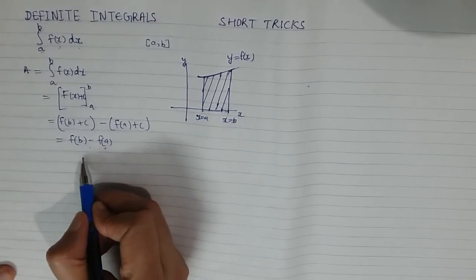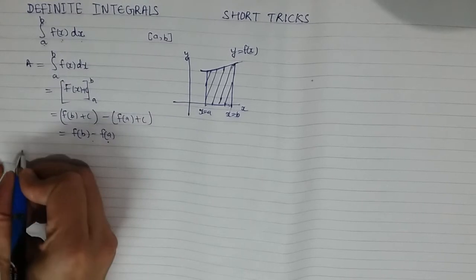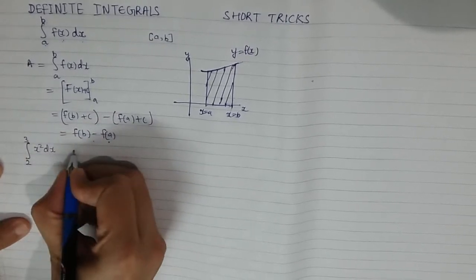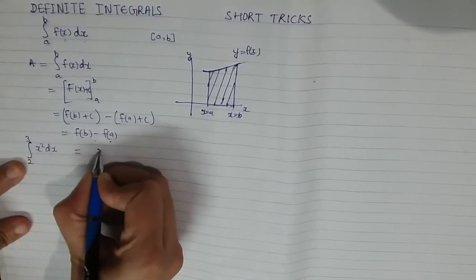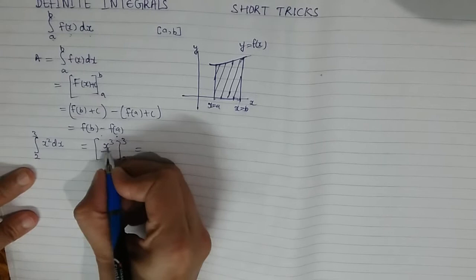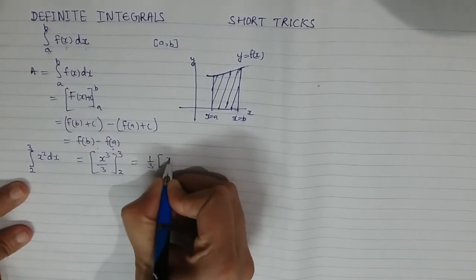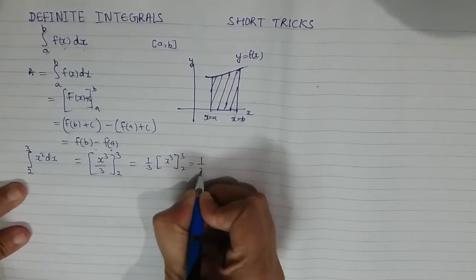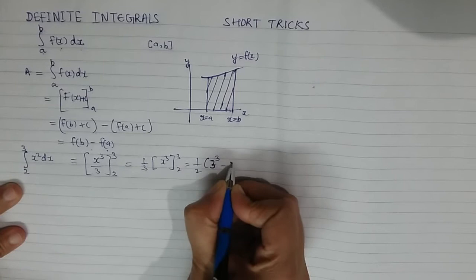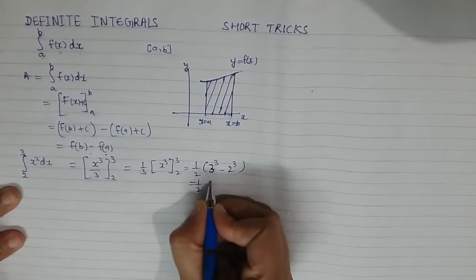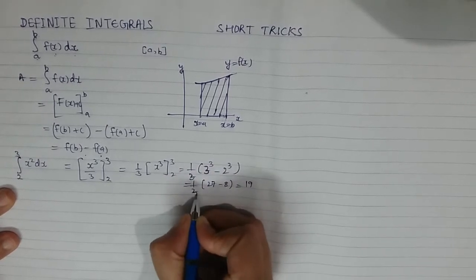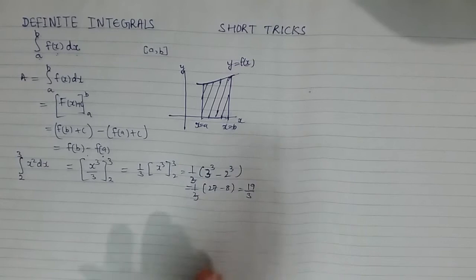Let us take an example. We have the definite integral from 2 to 3 of x² dx. We integrate x²: the integral of x² is x³/3. We then put the limits — the upper limit first. This gives (1/3)(3³ − 2³) = (1/3)(27 − 8) = 19/3. So the value of this definite integral is 19/3.